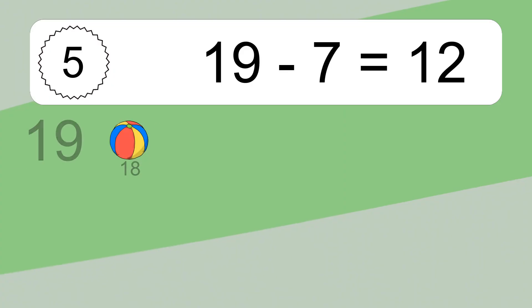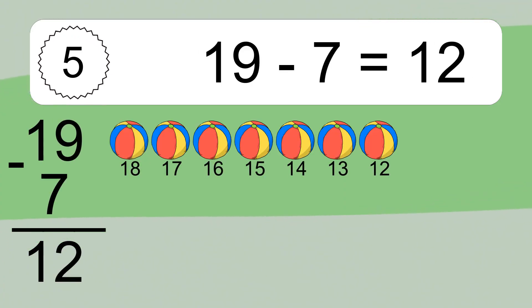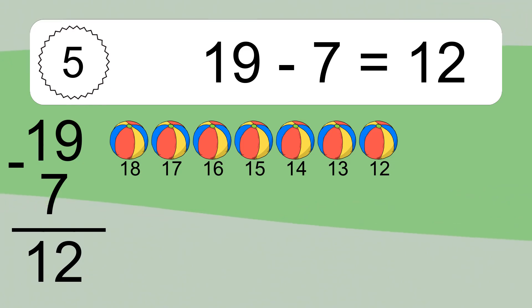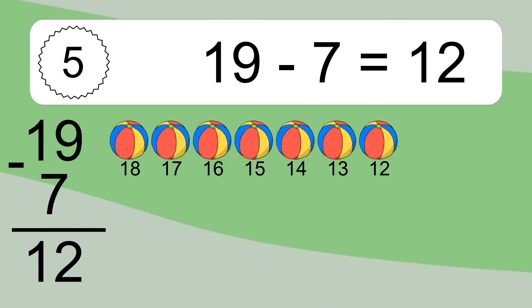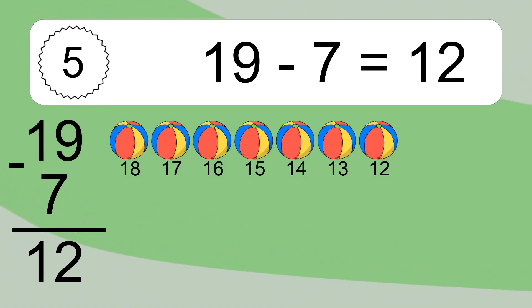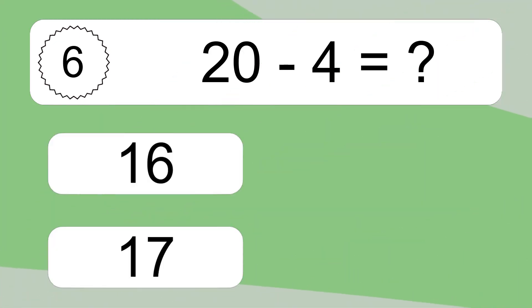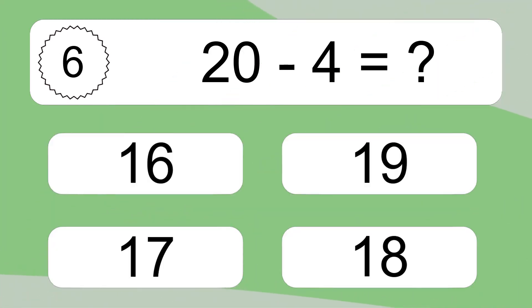19 minus 7 equals what? 19 minus 7 equals 12. Let's count it: 18, 17, 16, 15, 14, 13, 12.